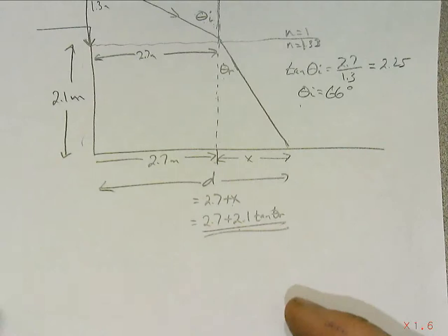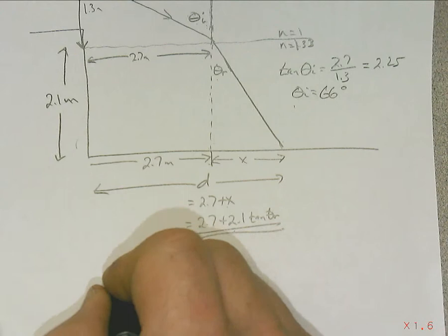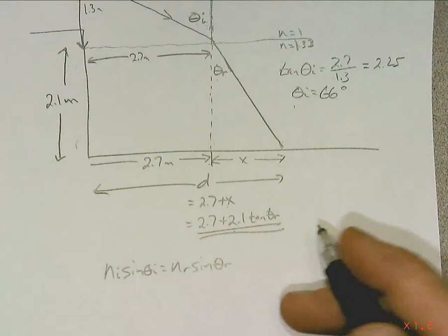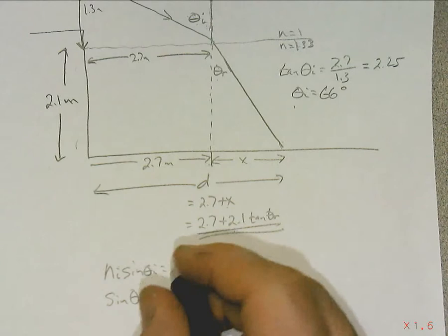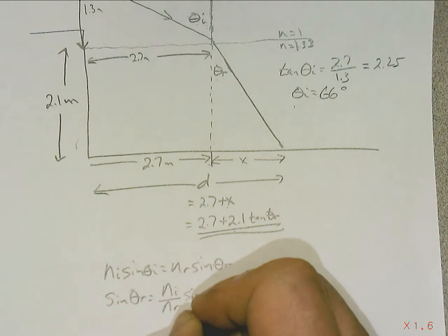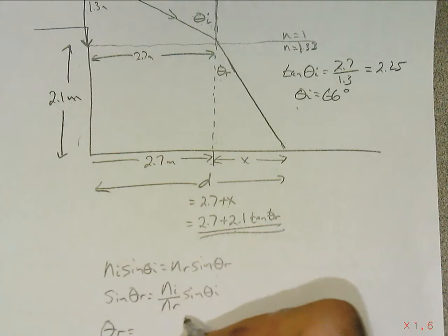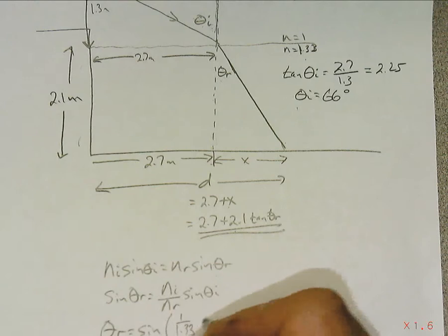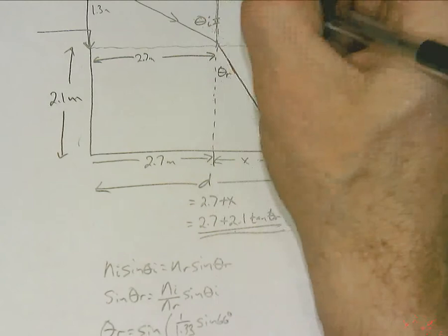Okay, now our final task is to go ahead and use Snell's Law to solve the problem. So n incident sine of theta incident is n refracted sine of theta refracted, and we are looking for the refracted angle. So sine of the refracted angle is equal to n incident over n refracted sine of theta incident. Theta refracted is equal to the inverse sine of n I, and the incident is 1, the refracted is 1.33, sine of 66 degrees, the incident angle.